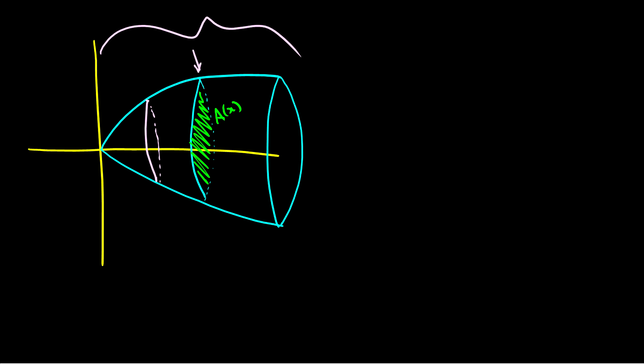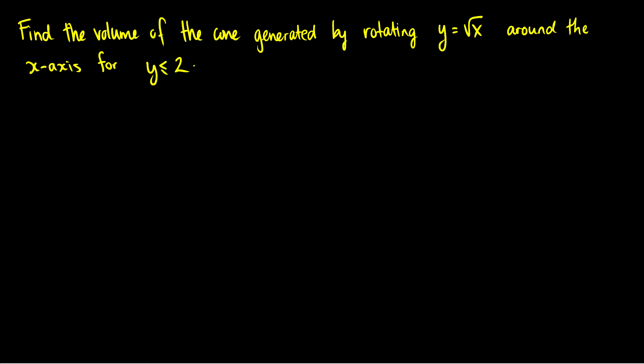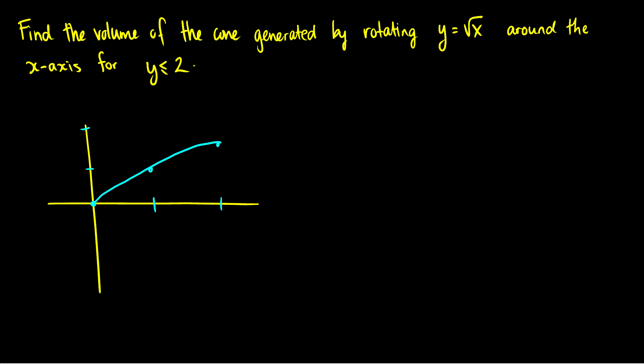So let's actually do this specific example with the cone. Find the volume of the cone generated by rotating y equals root x around the x-axis for y less than or equal to 2. We can note some values: at x = 0, the square root of 1, and the square root of 2. So let's draw that cone — we rotate it around the x-axis, and it'll look just like we had before. I'll draw another cross-section so we can clearly see what we're doing.